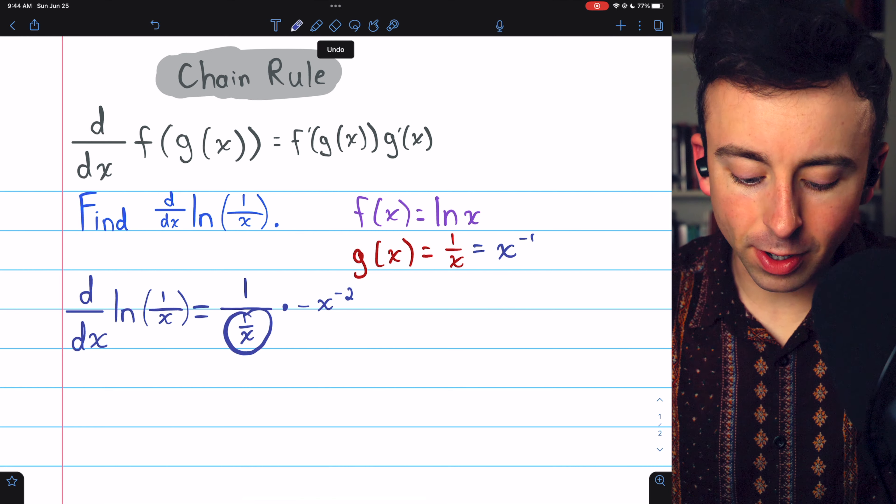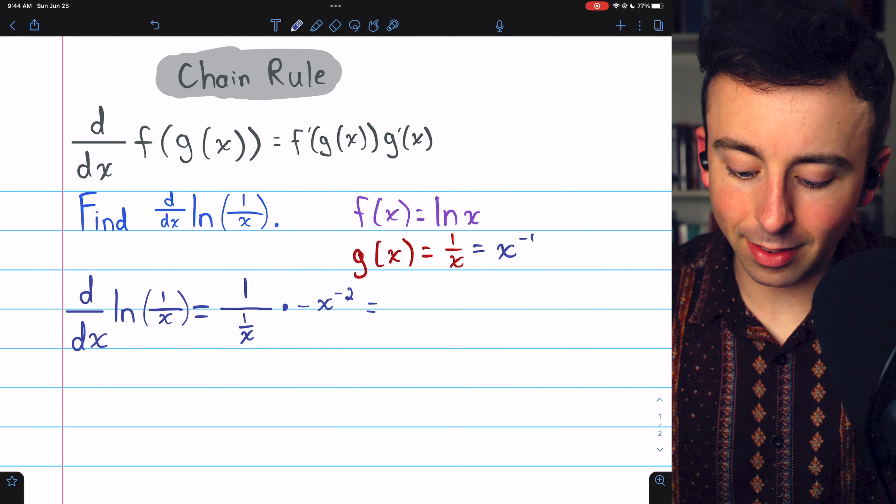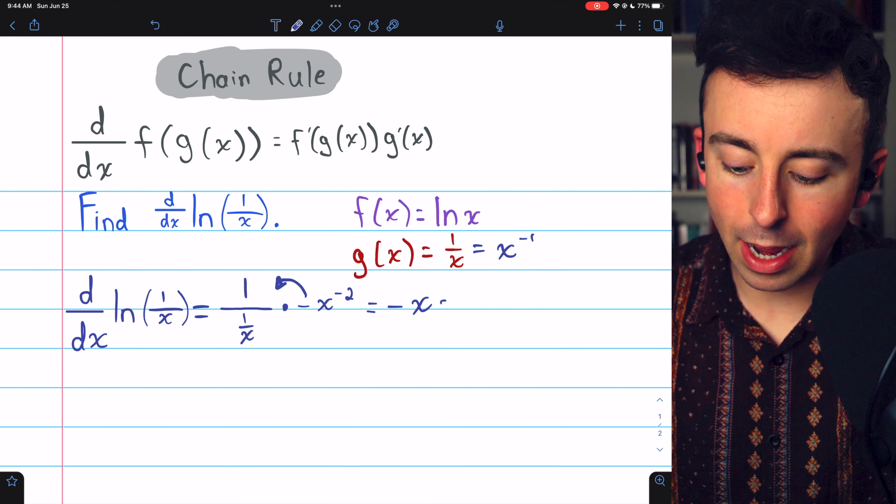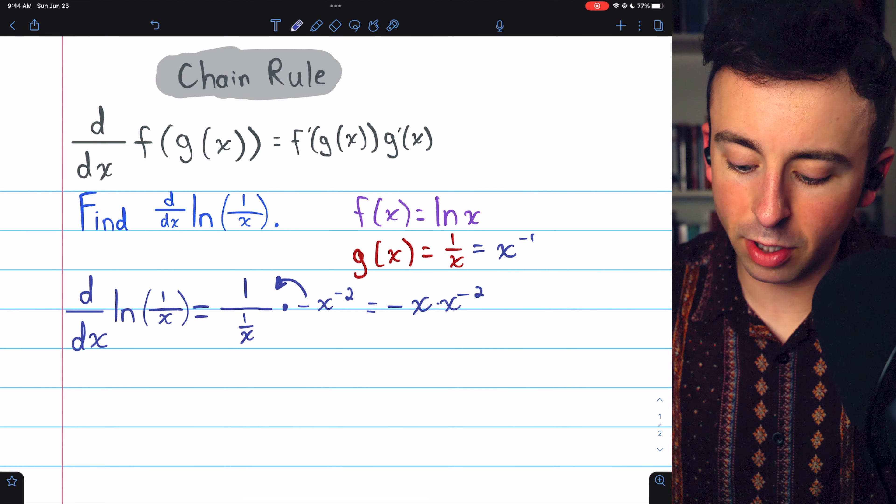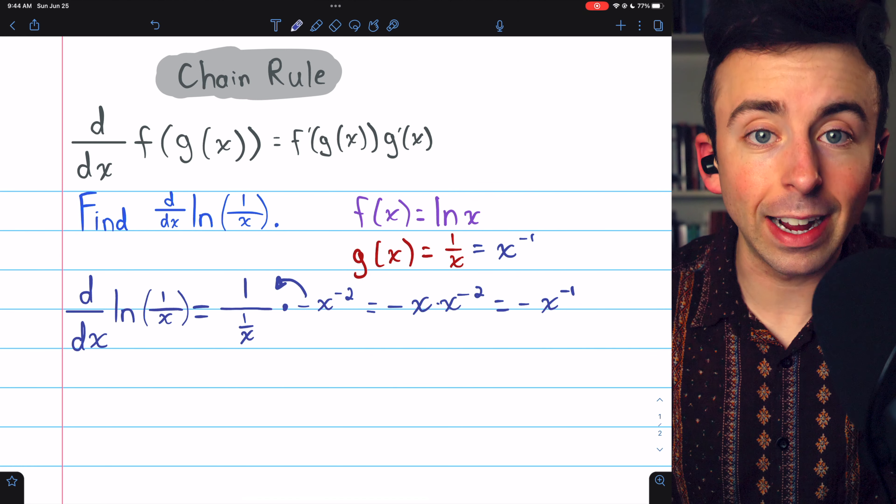Now dividing by a fraction is the same as multiplying by the reciprocal. So this is the same as negative, bringing that negative to the front, negative x multiplied by x to the negative 2, which is the same as negative x to the negative 1 by our exponent rules.